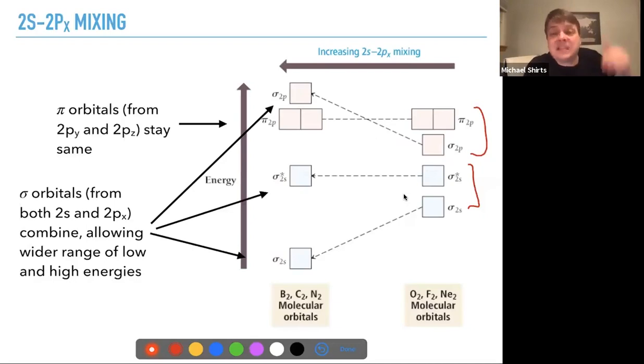So, the sigma 2s get lower in energy and the sigma 2p gets higher in energy. This is all very hand-wavy, I realize.